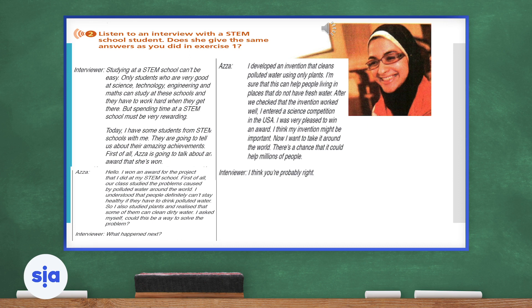Okay guys, remember the exercise one question. How can we solve the problem of polluted water? Do you think Azza was able to solve this problem? Definitely. How did she solve this problem? She probably did so through the invention that she created by cleaning the water using plants.